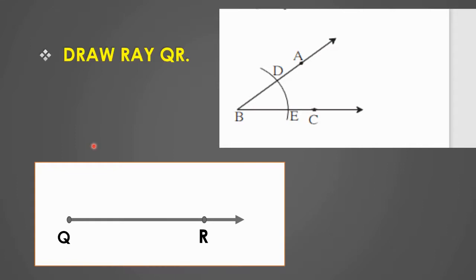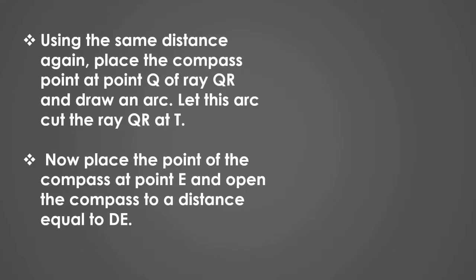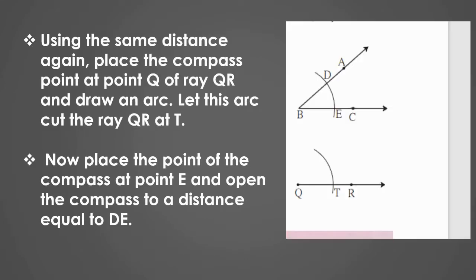First step: draw ray QR. Second step: using the same distance, place the compass point at point Q of ray QR and draw an arc. Let this arc cut the ray QR at point T.